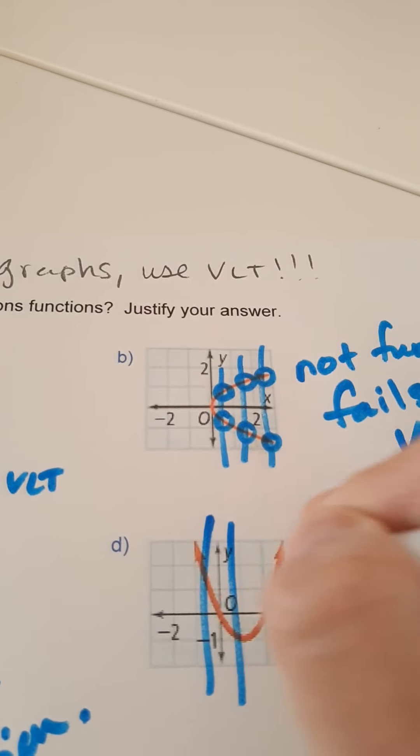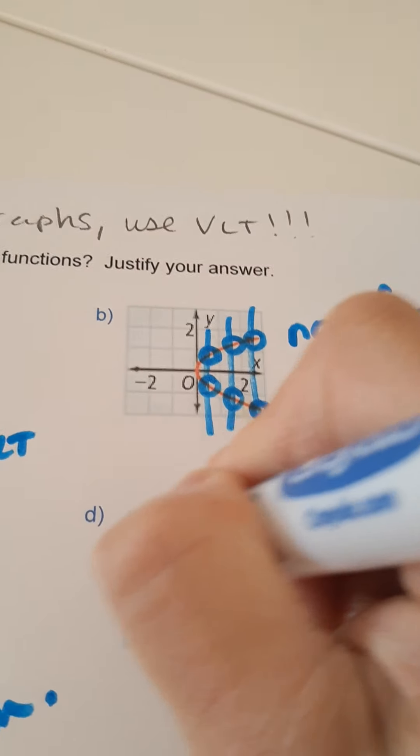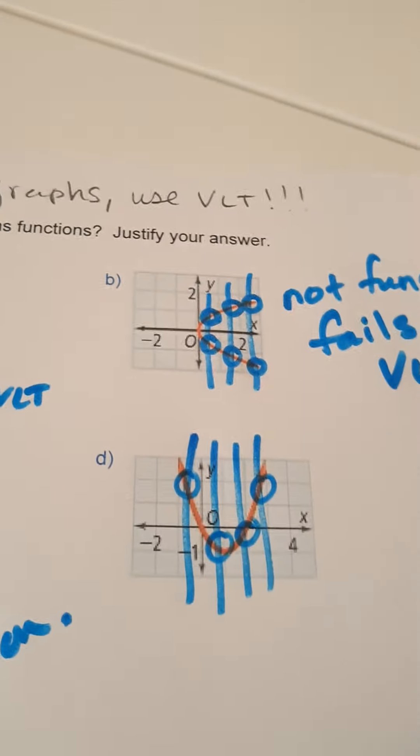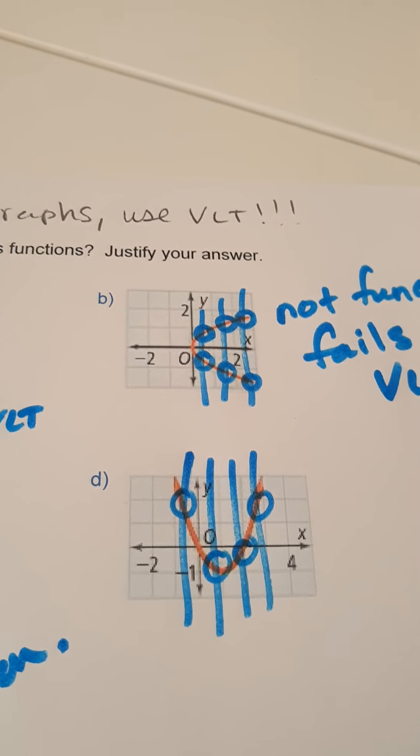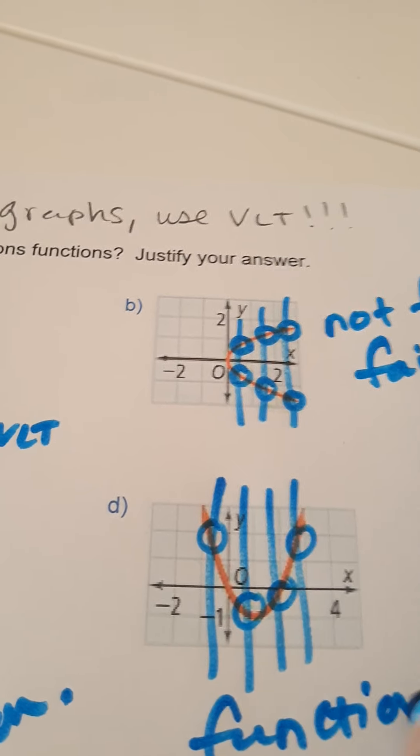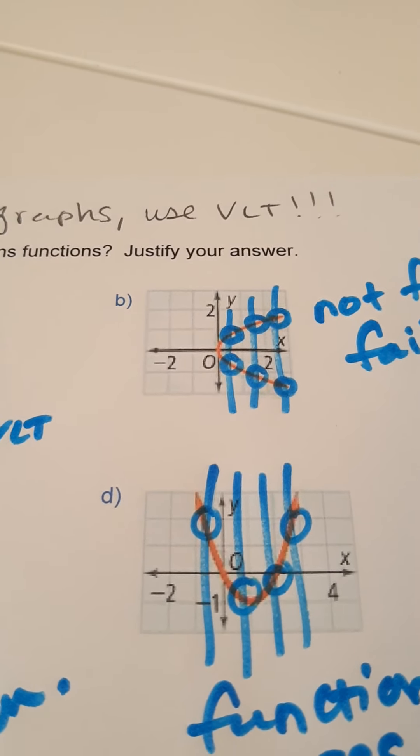And then the last problem of the day. Draw as many vertical lines as you want. The vertical lines you draw are only going to touch the U shape, the parabola, once. So, this is a function. It passes. Your reason, your justification, is it passes the vertical line test.